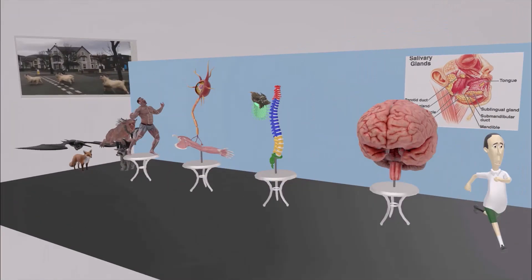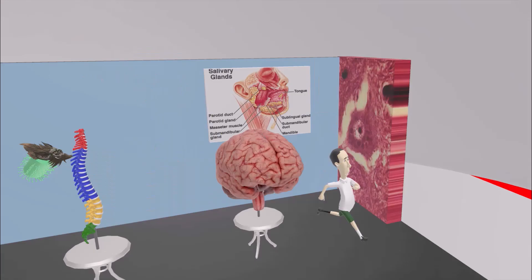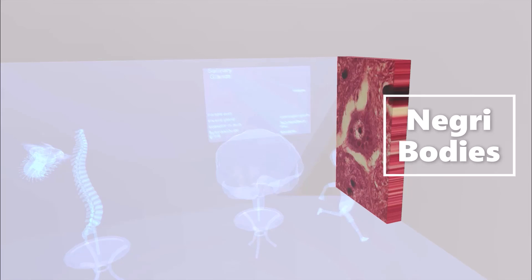If we take a look at the wall over here, we notice a classic picture of the Negri bodies, which are viral inclusions seen in the brain, usually only after the patient has died.